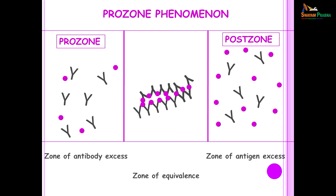This brings me to another aspect: the prozone phenomenon. When we mix antigen and antibody, if there is a zone of antibody excess you will not get a visible reaction, and this zone where there is antibody excess is called the prozone phenomenon. Whenever antigen and antibody are in equal numbers we have a zone of equivalence, when you will be able to see a visible reaction. Postzone is a phenomenon where there is excess of antigen and less antibody — here again your reaction will not be observable. So how do we overcome this prozone phenomenon?